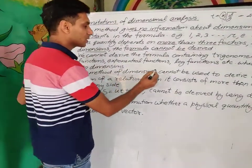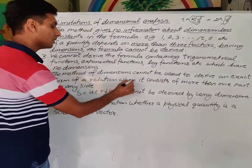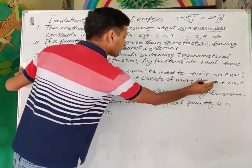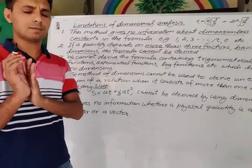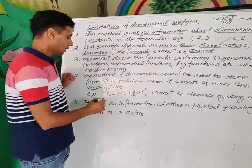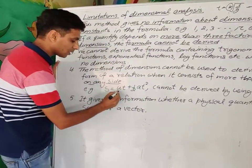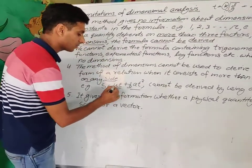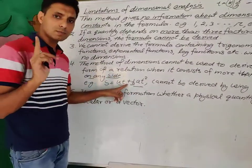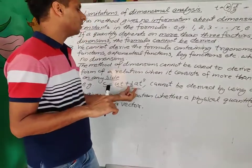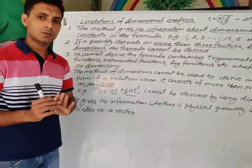The method of dimensions cannot be used to derive an exact form of a relation when it consists of more than one part on any side. For example, the second equation of motion: S = ut + ½at². There are two parts here. If more than one part comes on any side, the relation cannot be derived by using dimensions.